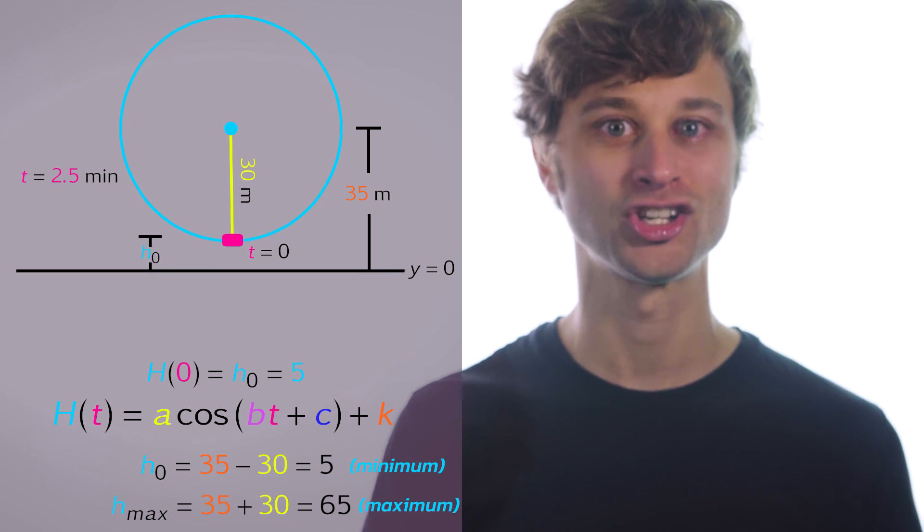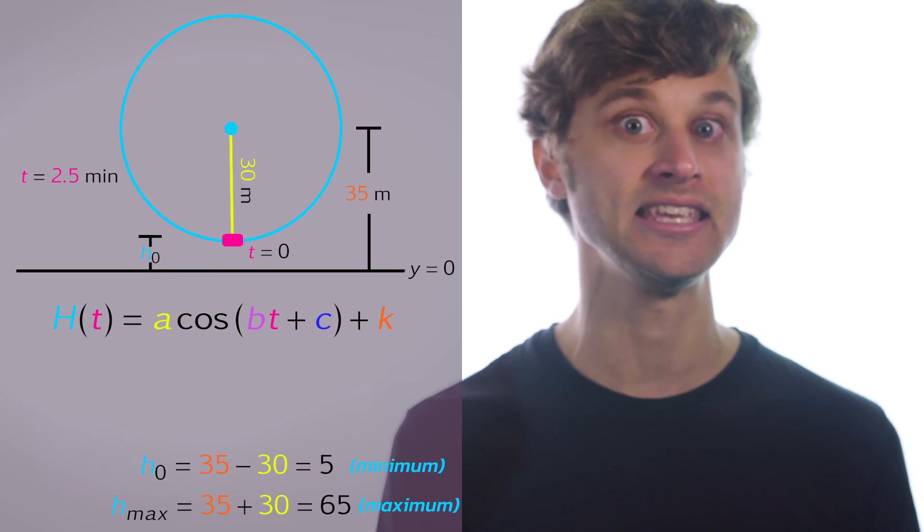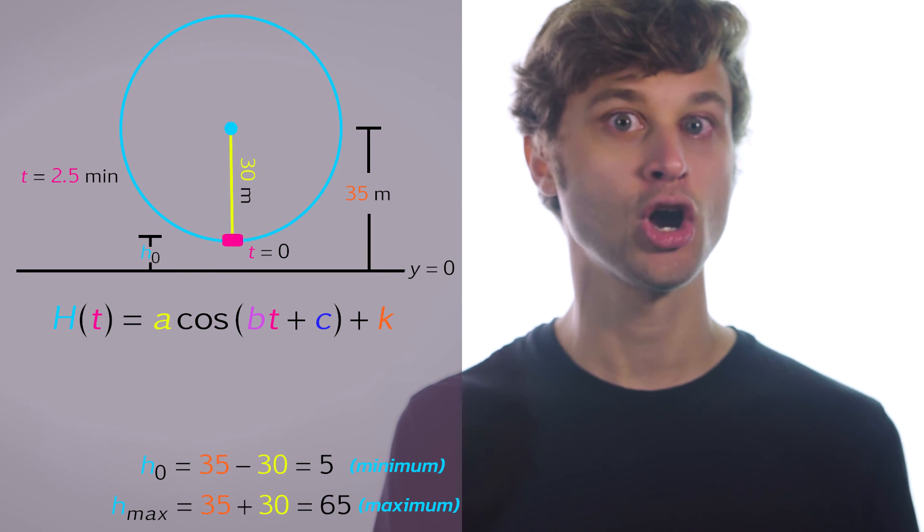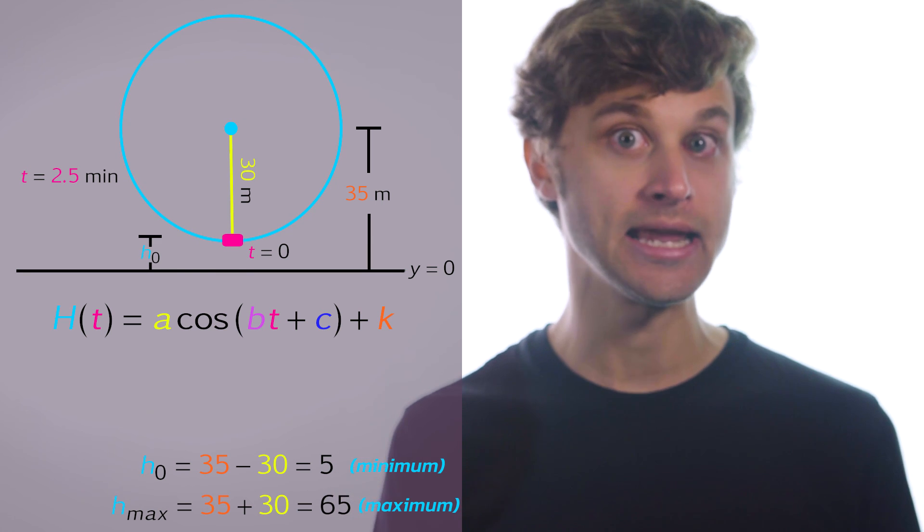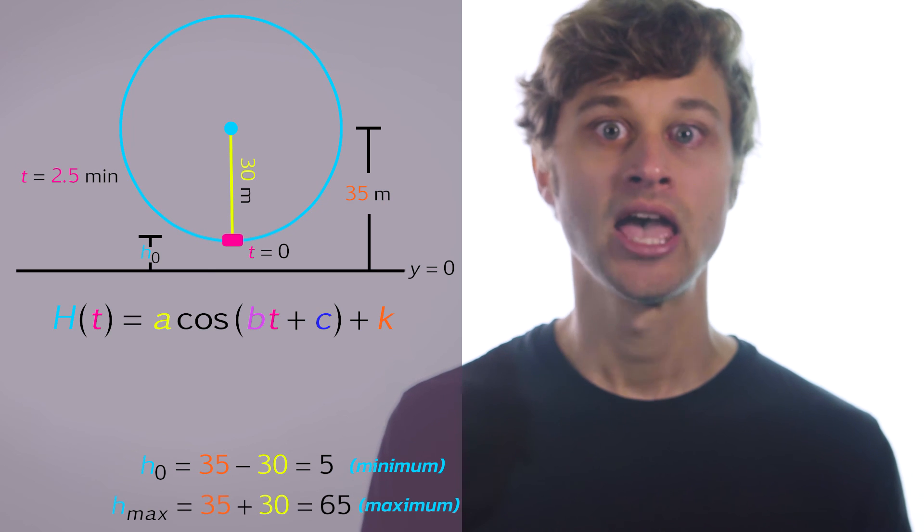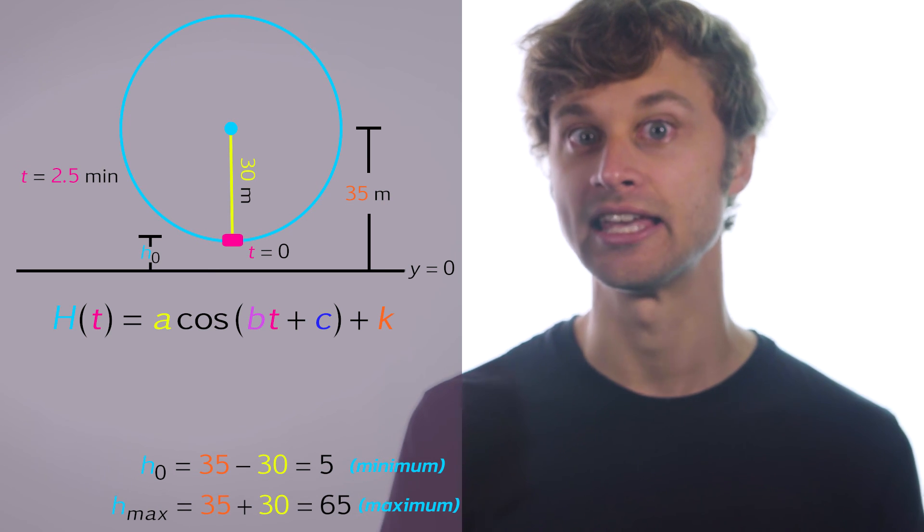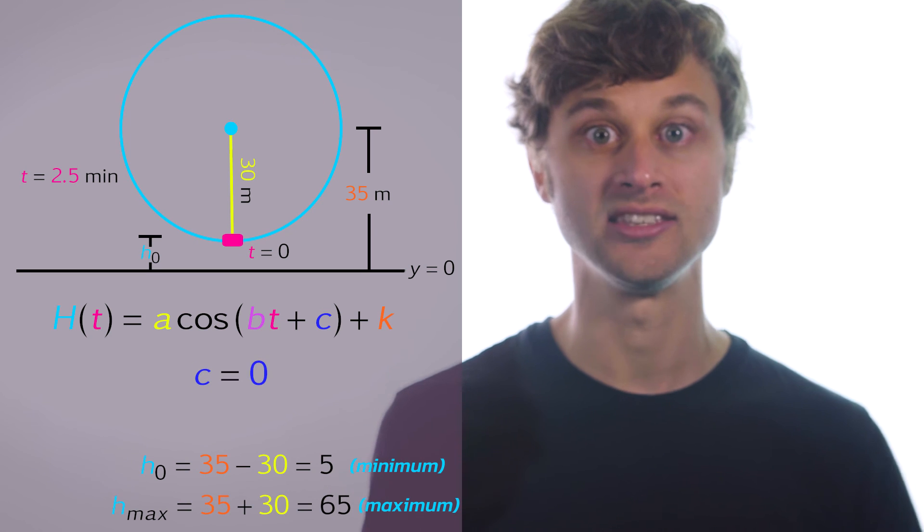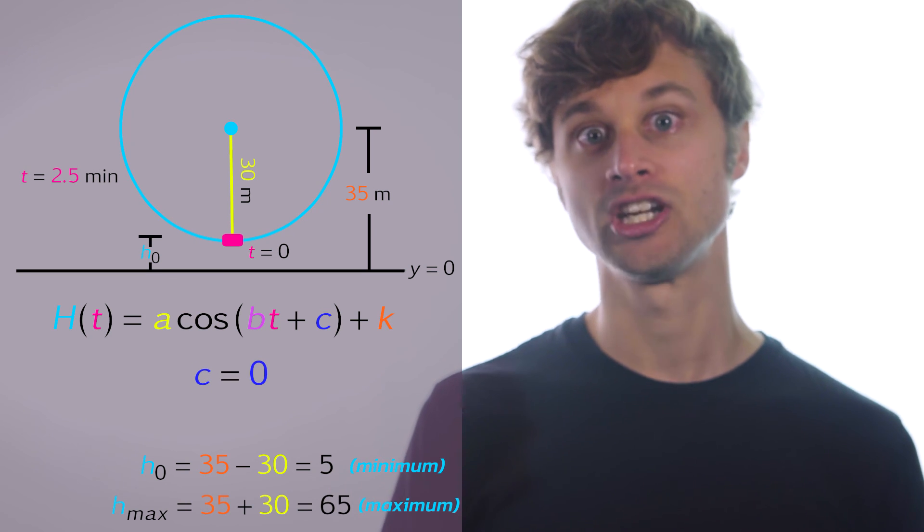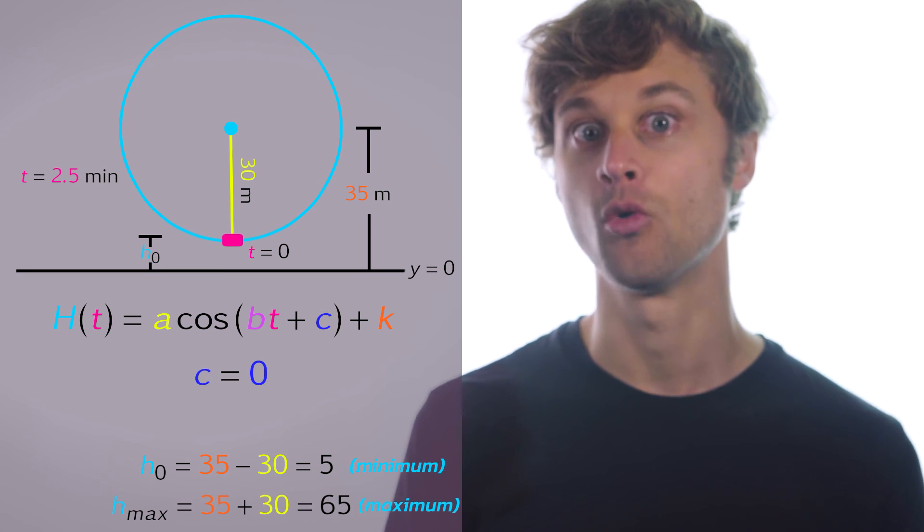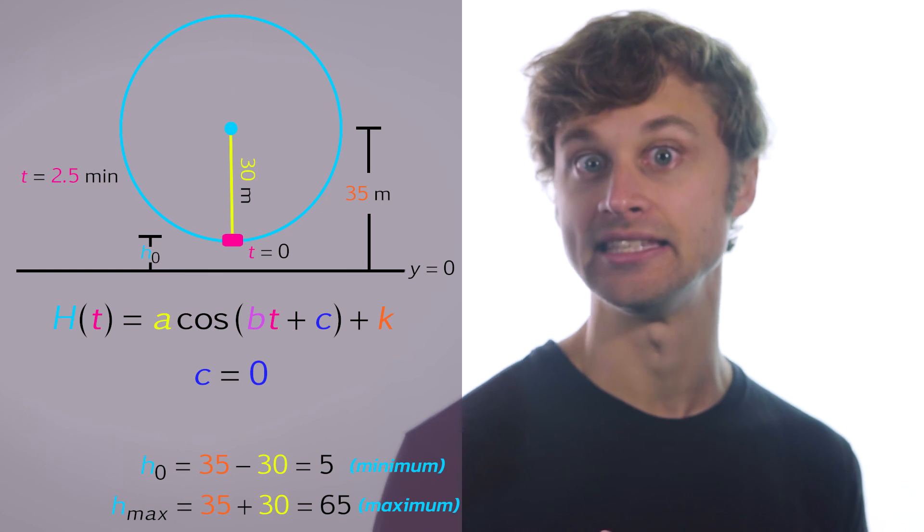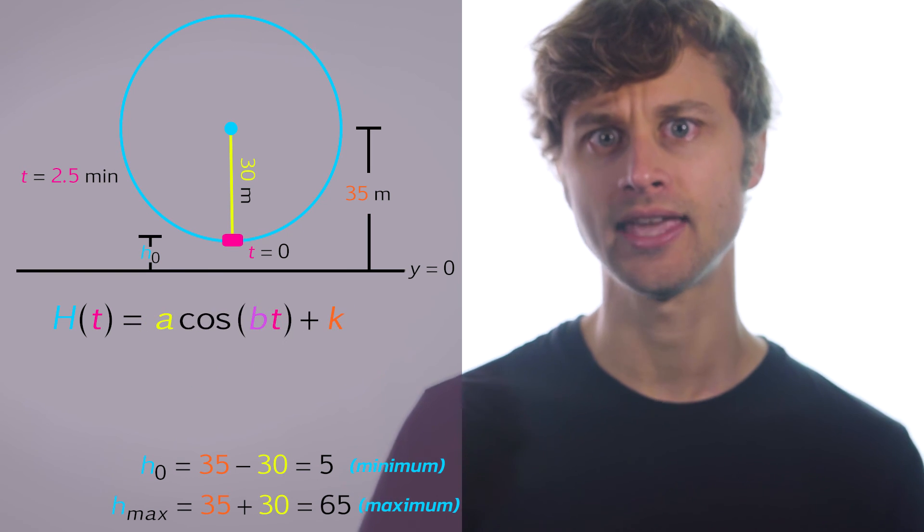So I want to solve this function now. Capital H of t is equal to a times cosine of bt minus c plus k. Now because we chose our function cosine accurately, that c value is actually going to be zero. This function isn't shifted left or right away from a maximum at t equals zero, so c is again equal to zero.